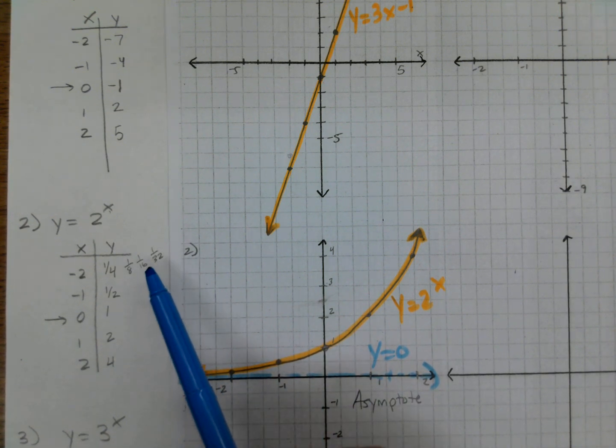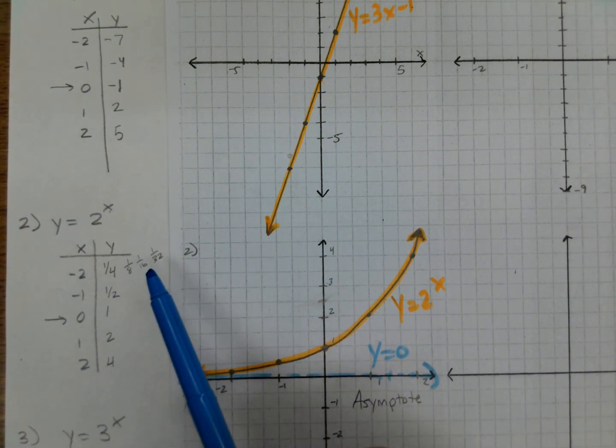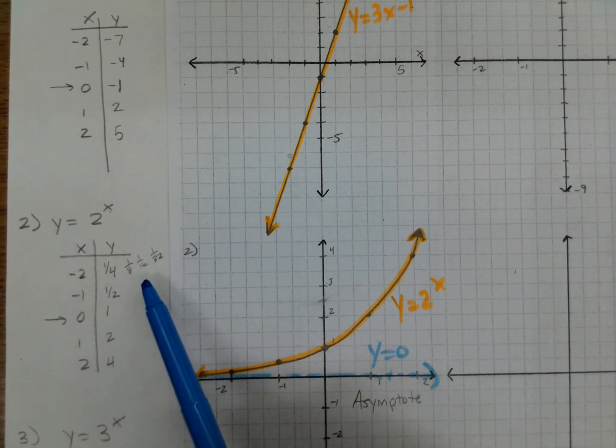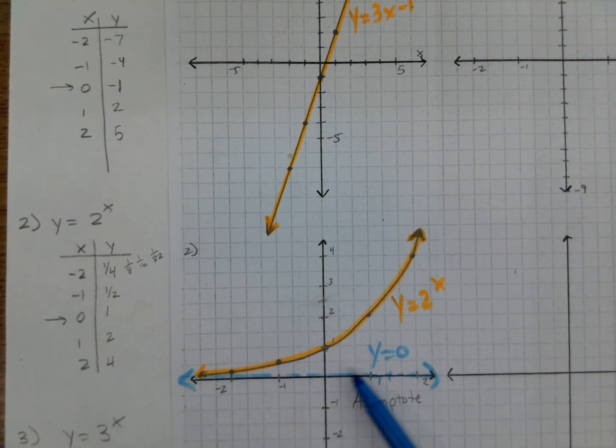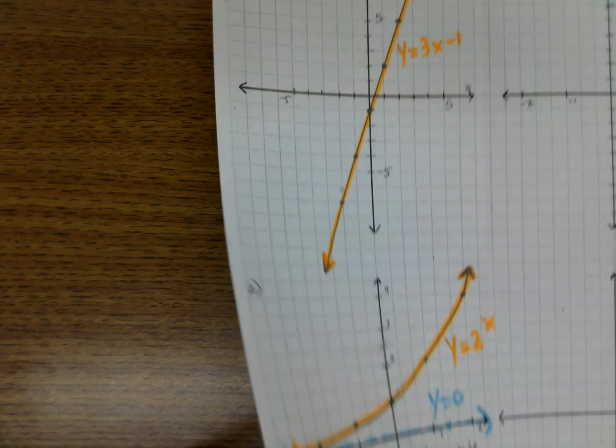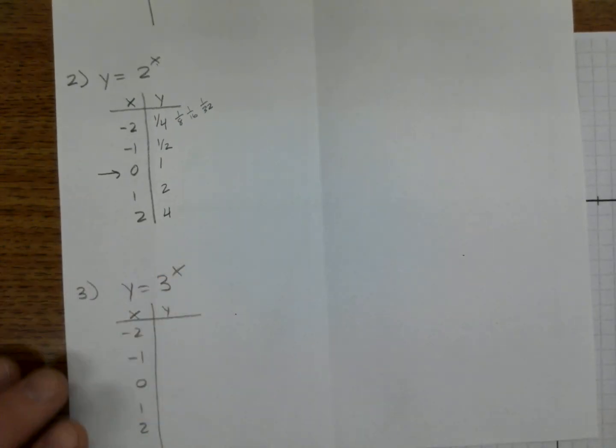This line keeps getting closer and closer and closer to 0. But these fractions up here will never touch 0. They keep getting closer. So this graph really has two parts. It has the equation graph, but it also has this line over here. It's kind of like a fence. You can keep getting closer and closer to it, but you can't cross over. All right, let's do one more. We did one more in class today.